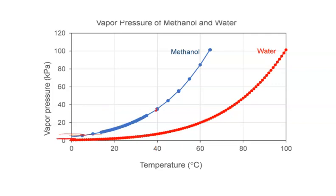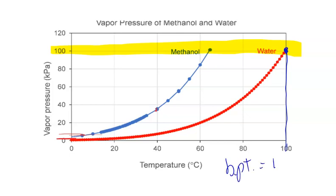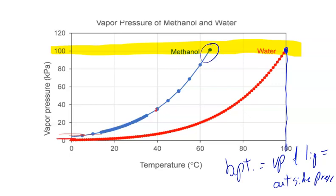If you keep going up the temperature axis, you find that at standard pressure (101.3 kPa), water reaches that pressure at 100°C — and that is its boiling point. The boiling point is when the vapor pressure of the liquid meets or exceeds the outside pressure. The definition doesn't necessarily require temperature — it's about pressure. Methanol can reach 101.3 kPa at a lower temperature than water, so it boils at a lower temperature.